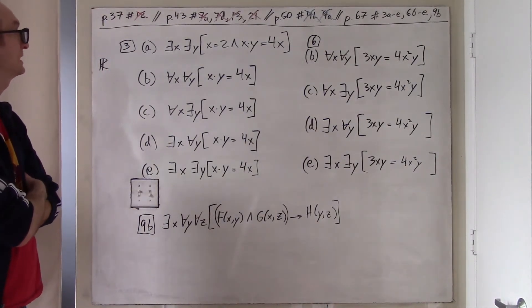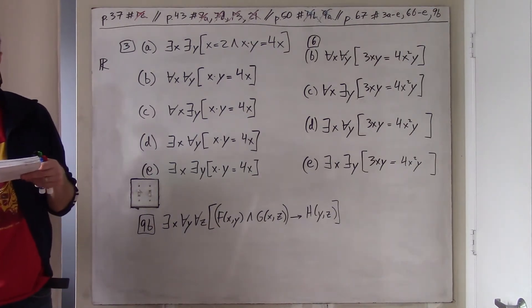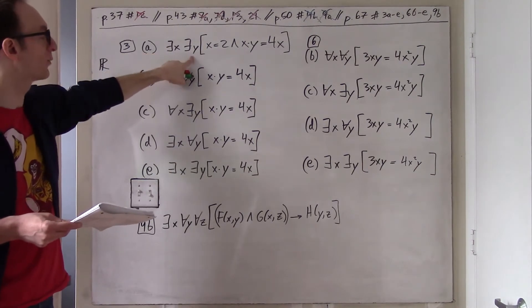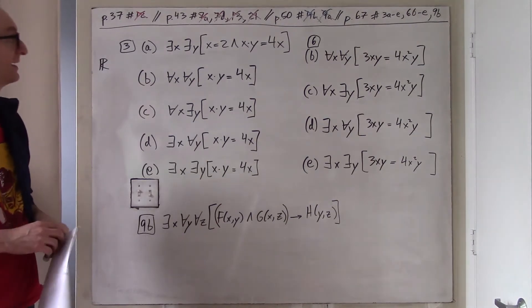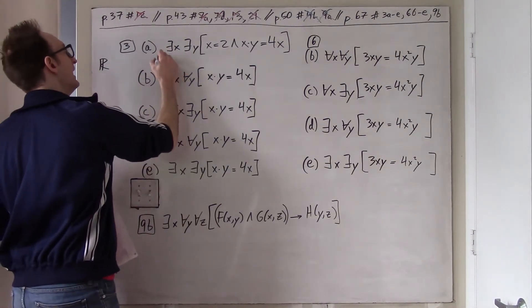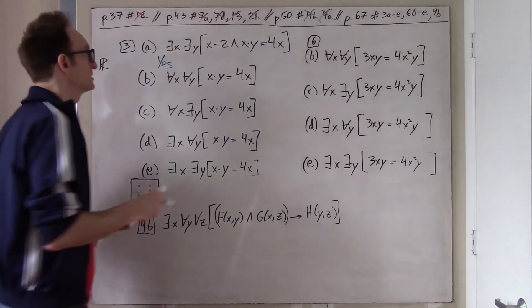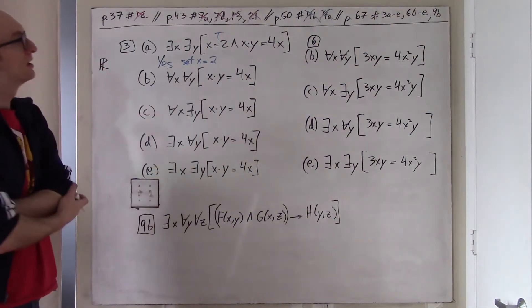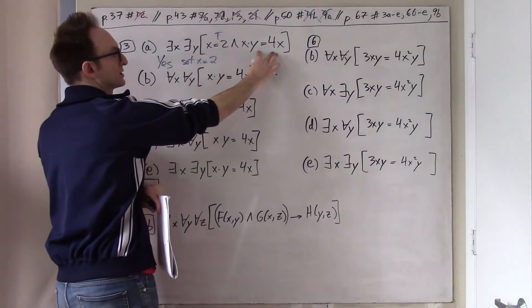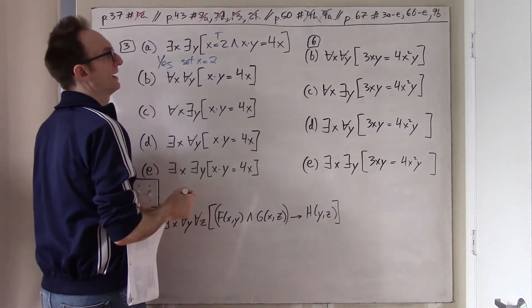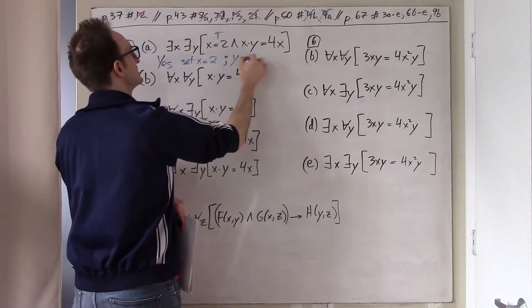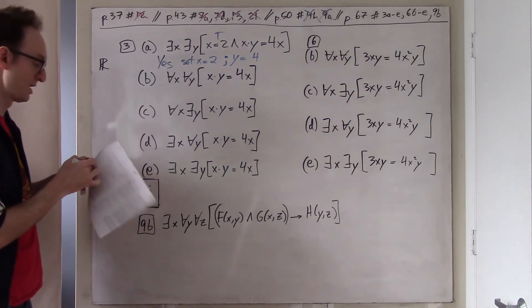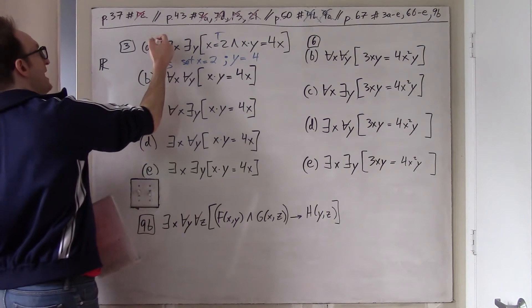3A: Does there exist an X and Y such that X = 2 and XY = 4X? The answer is yes — set X = 2, and then cancelling X from both sides of XY = 4X gives Y = 4. So just set X = 2 and Y = 4. The answer to 3A is true.